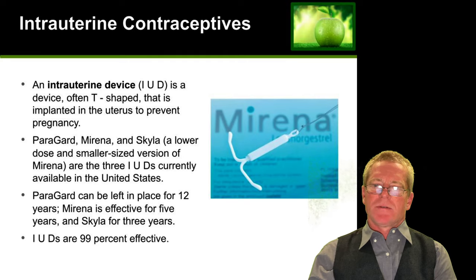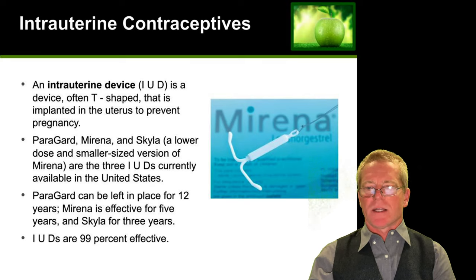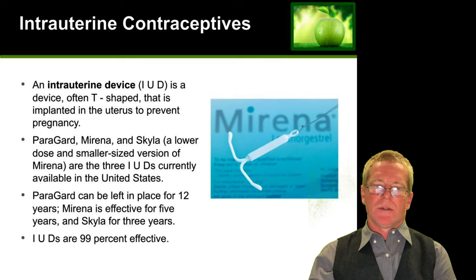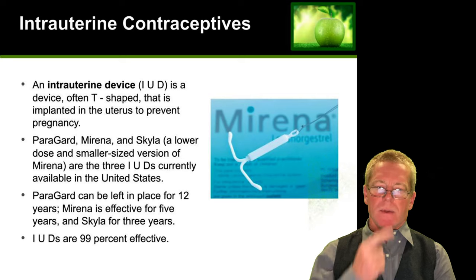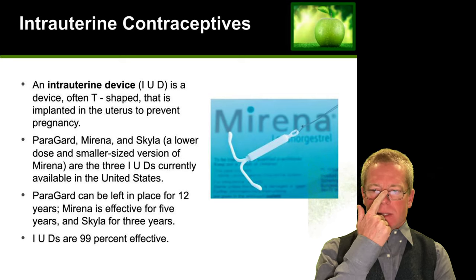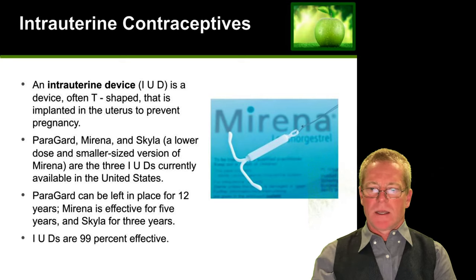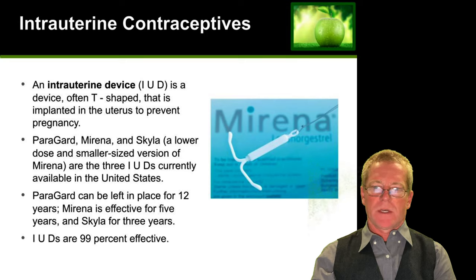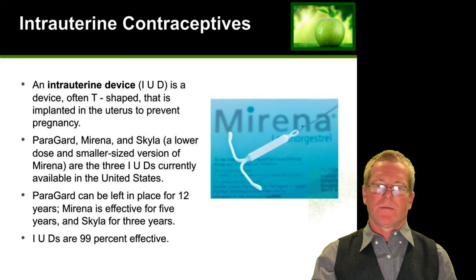Intrauterine devices — we talked about these. Paragard, Mirena, Skyla are different forms of IUD. They're placed in the uterus and prevent implantation of a fertilized egg. They can be very effective — up to 99% effective — but they do not provide any protection from sexually transmitted infections.